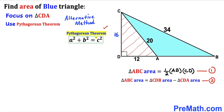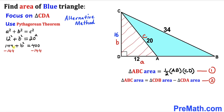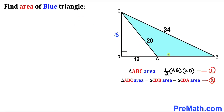We may verify using the Pythagorean theorem: a² + b² = c². Here a = 12, b is unknown, and c = 20. So 12² + b² = 20², which gives 144 + b² = 400. Subtracting 144 from both sides, b² = 256. Taking the square root, b = positive 16. So our side length CD is confirmed as 16.